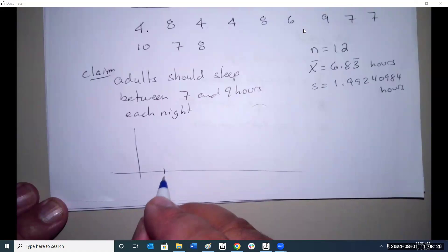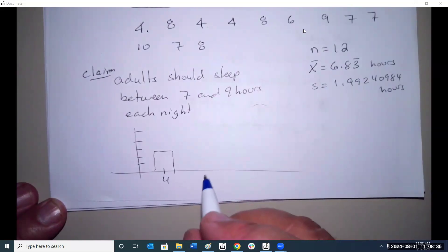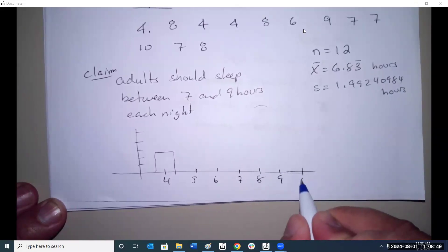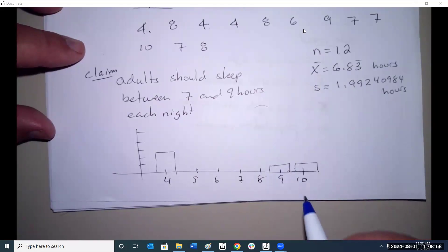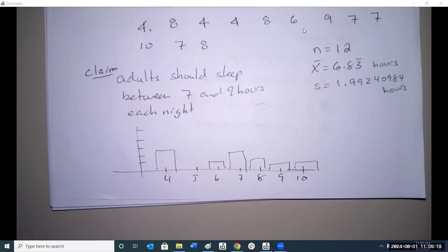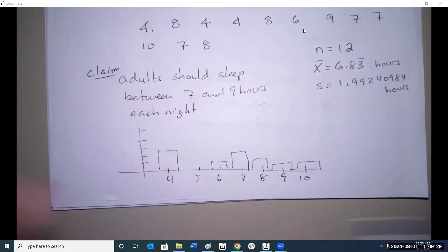We have 1, 2, 3. We have 3 at 4. We have 1 at 10, 1 at 9, 3 at 7, 2 at 8, 1 at 6. Okay, now individually, no. But if we look at 4 and 5, 6 and 7, 8 and 9 and 10, if we combine them in groups of 2, then what would our graph look like? So 4 and 5 has 3 also. 6 and 7 has got 4. 8 and 9, 2, 3, 4. And 10, 1.